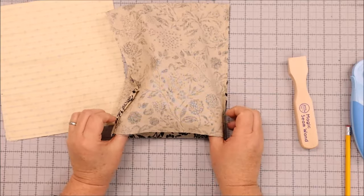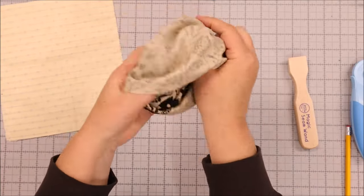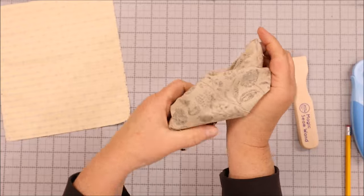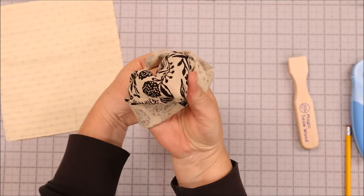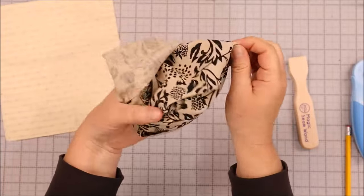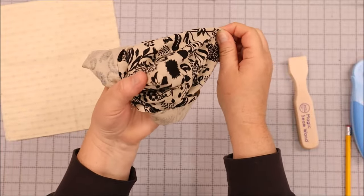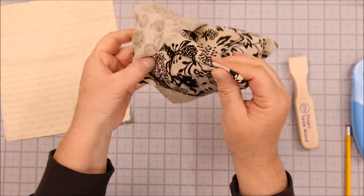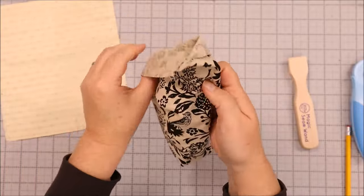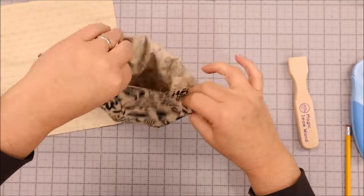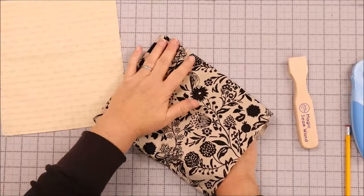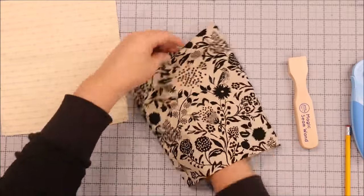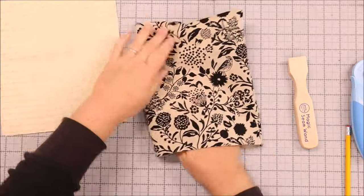All right, once this is done, we are going to just turn this right sides out and we're going to use our finger or a wood turner or pencil, whatever you have to push these points out. This is going to be the outside of the bag. And there we go. If you want to iron this, you can.